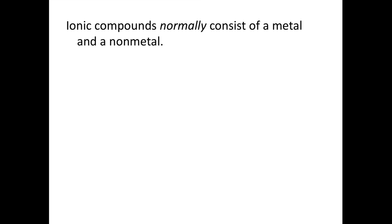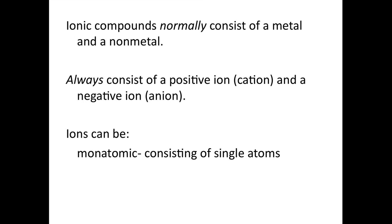To review, ionic compounds normally consist of a metal and a nonmetal. They always consist of a positive ion or cation and a negative ion or anion. Ions can be monatomic, consisting of single atoms, or polyatomic, where you have two or more atoms that are covalently bonded together and where the molecule itself has an overall charge either positive or negative.